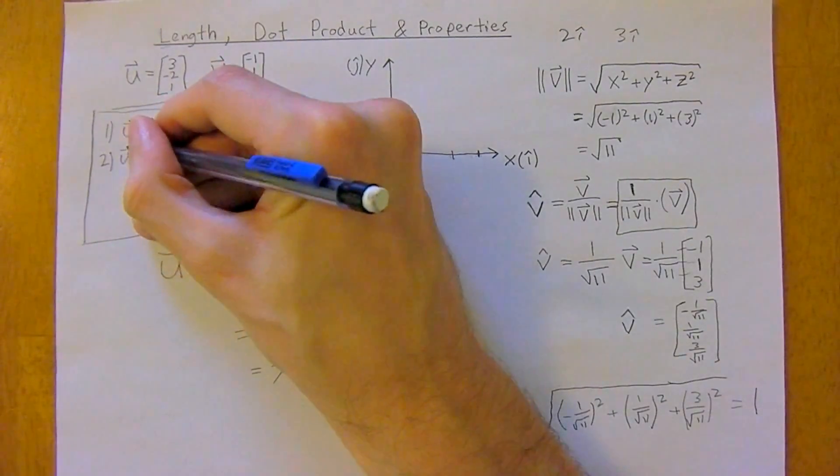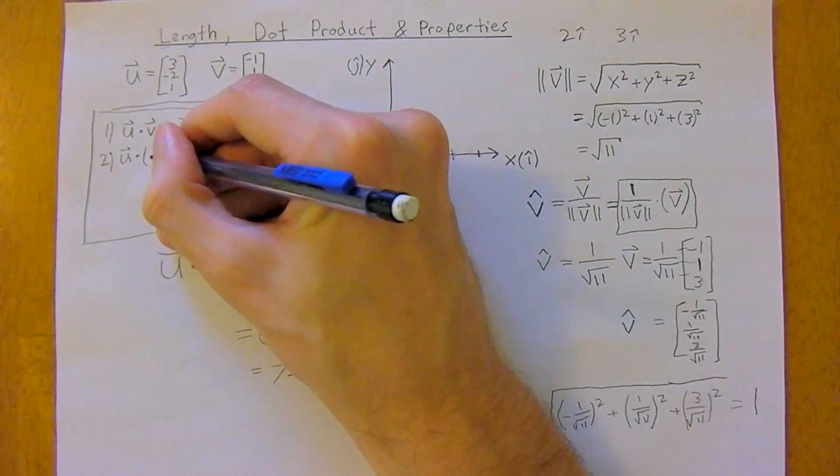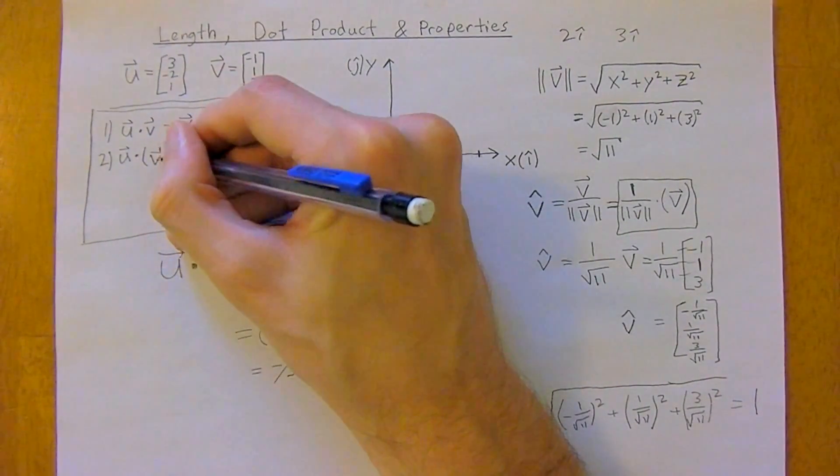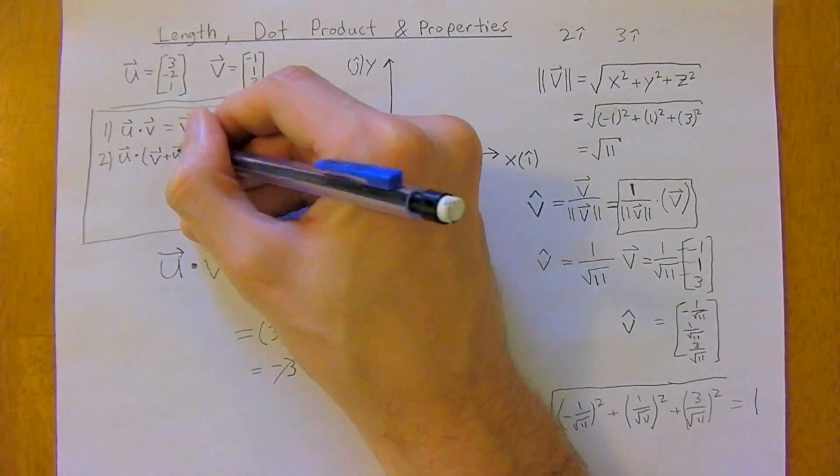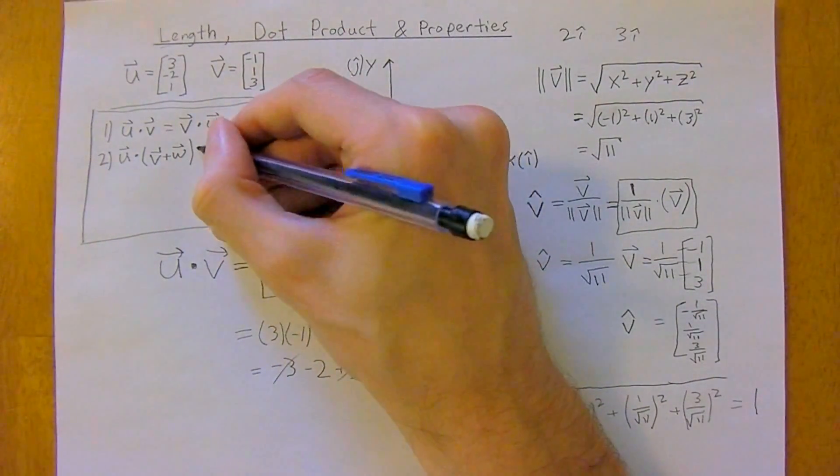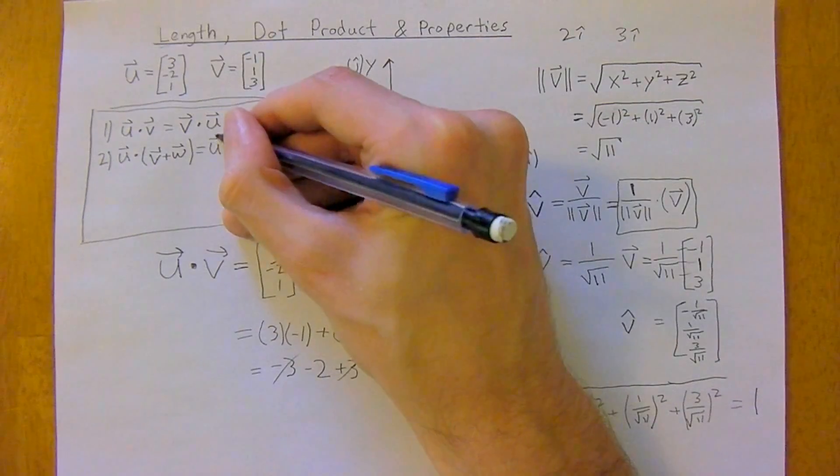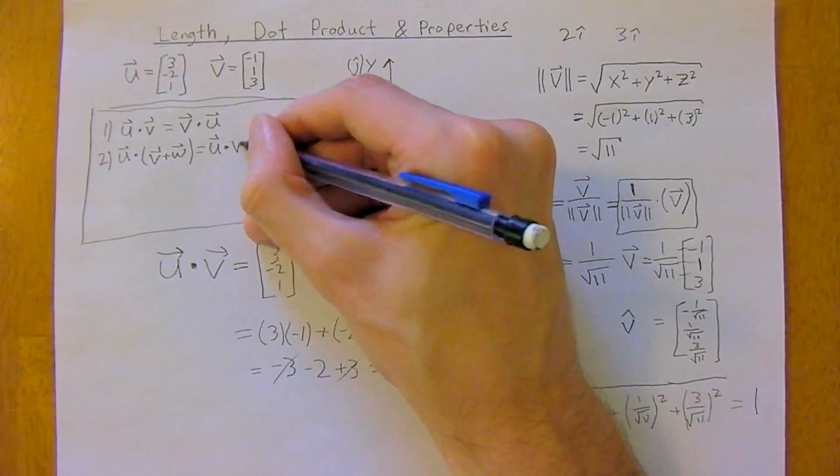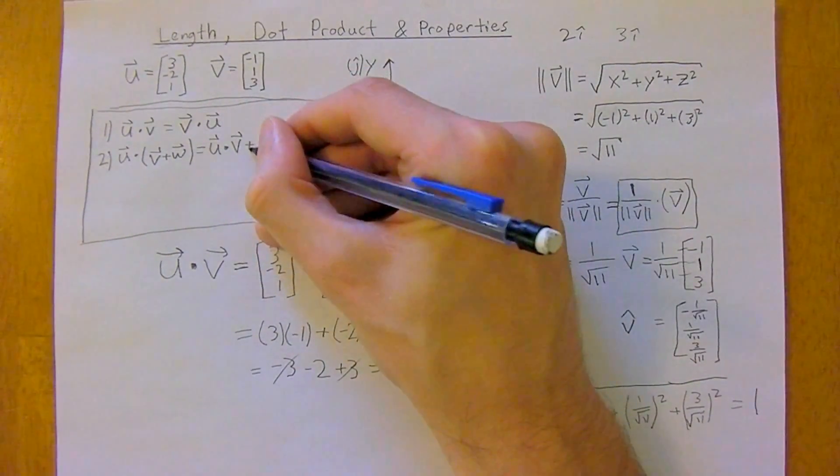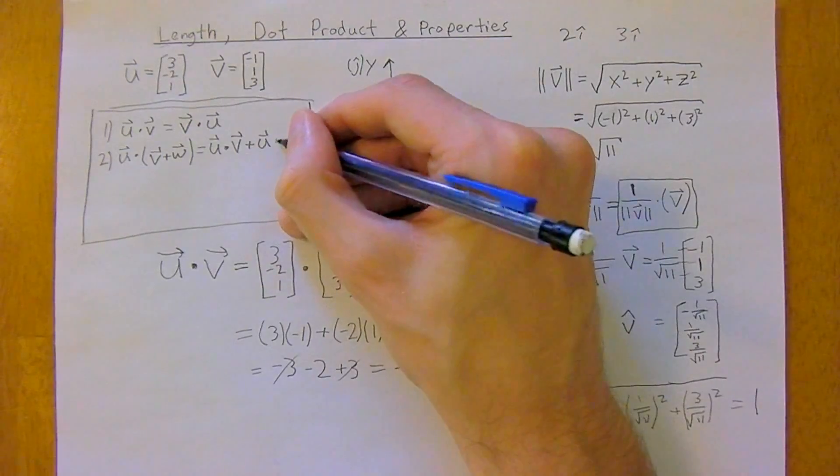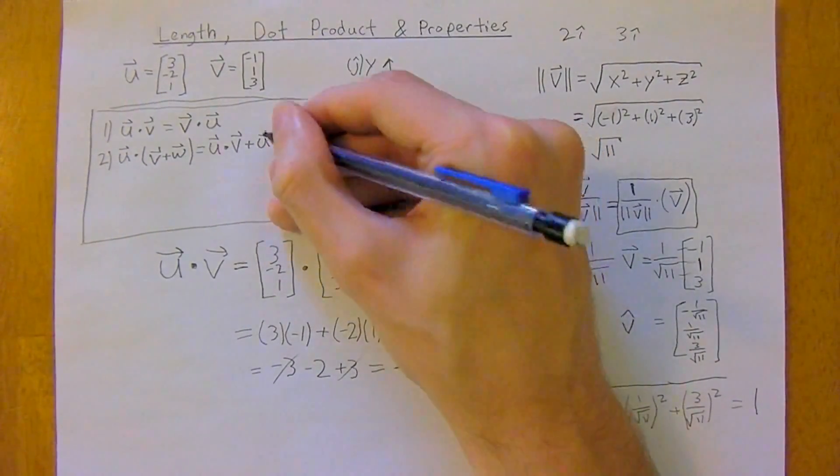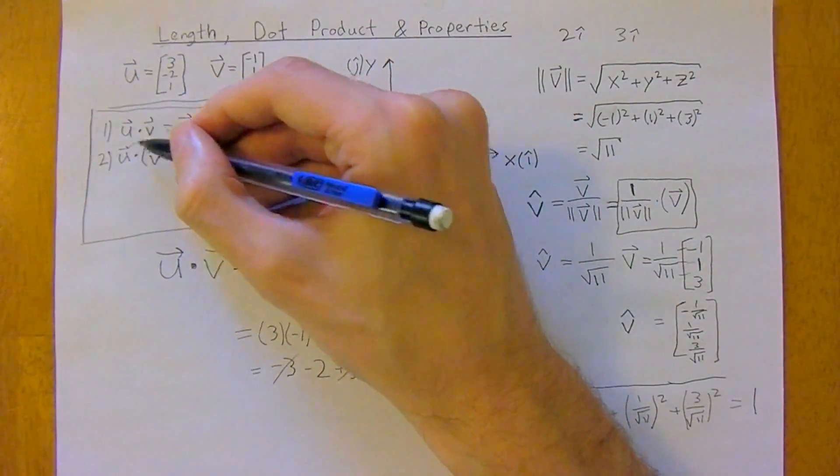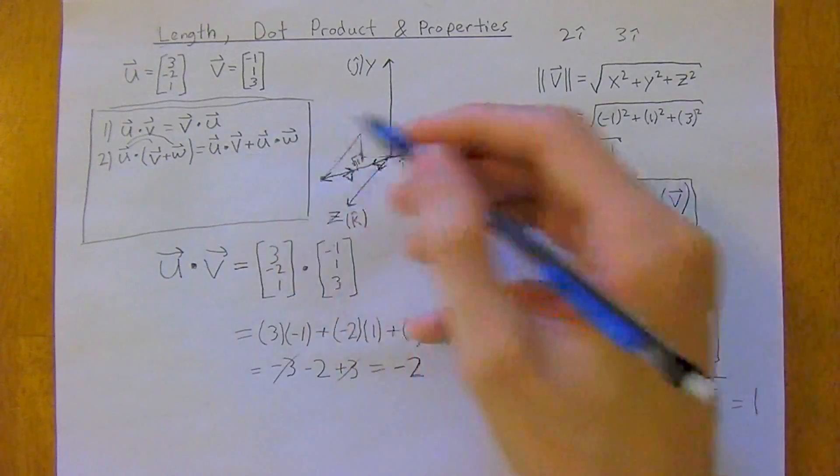u dot (v plus w), and these are all vectors here, is equal to u dot v plus u dot w. So just think of regular algebra, foil it out, multiply it out.